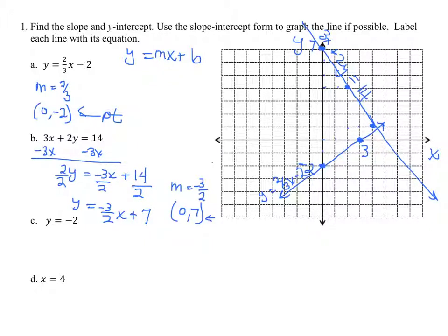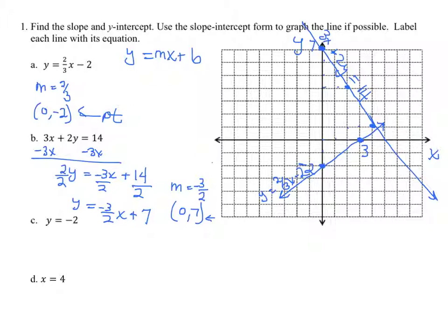Great. So we found the slope. We found the y-intercept. We used them to graph the line. And we don't need a table for those two because you just plot that y-intercept. And then you use the slope to graph the line.